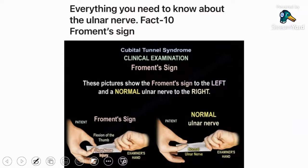Fact number ten is Froment's sign. When you lose adduction of the thumb — supplied by the ulnar nerve — and ask the person to pinch a piece of paper, there's no adduction available, so the person bends the thumb instead. That is a positive Froment's sign.